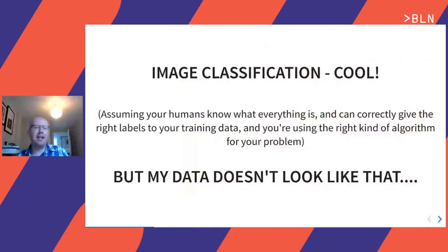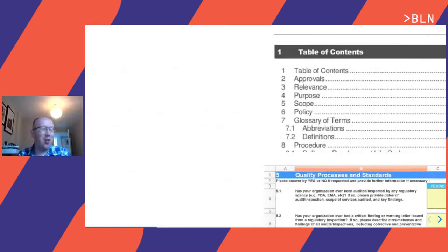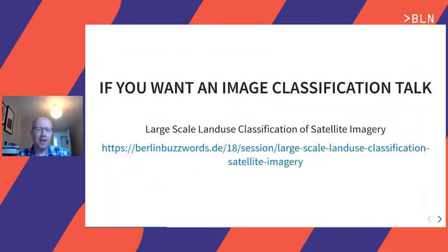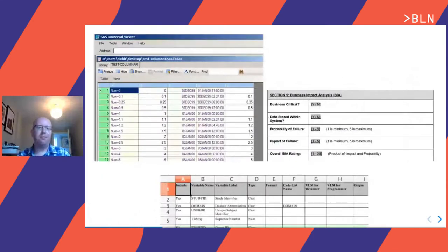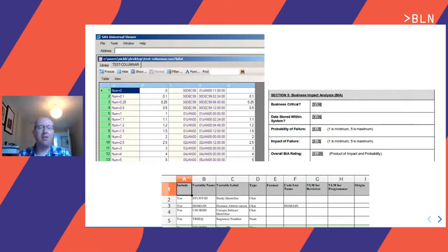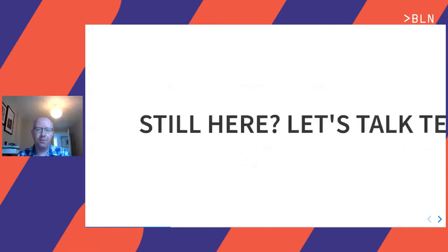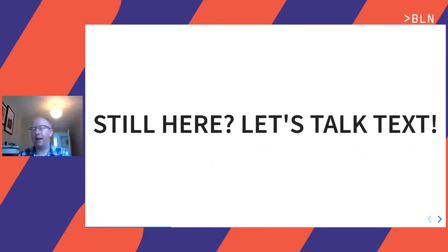Assuming your humans know what everything is and can give you the right labels for the training data with the right kind of algorithm — image classification, really cool, off you go. The problem that I have, and some of you probably also have, is that my data does not look like that. My data looks a lot more like this — it is text. Some numbers, some spreadsheets, but mostly it's a lot of text. If what you have is lots of images, I can really recommend a talk from Berlin Buzzwords from a couple of years ago. But what I have, what hopefully you all have, is some text.